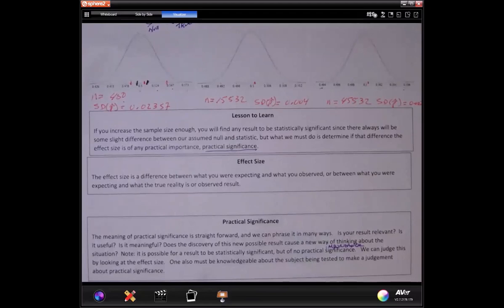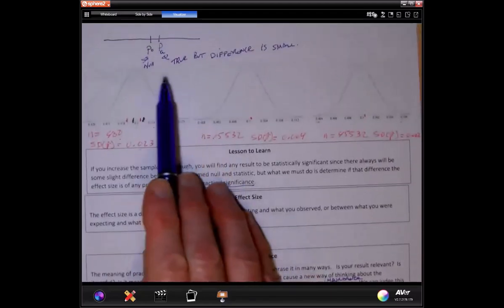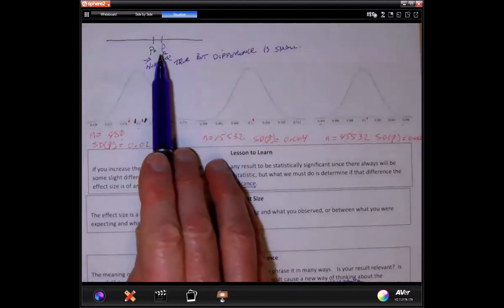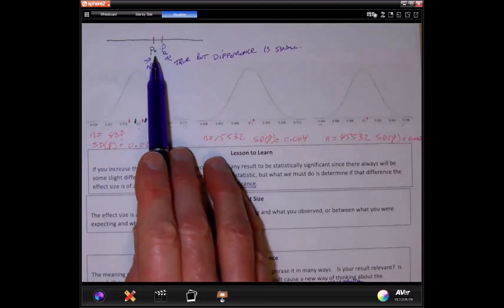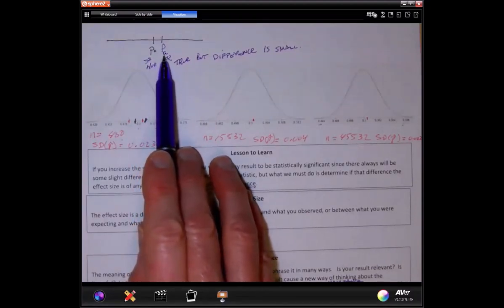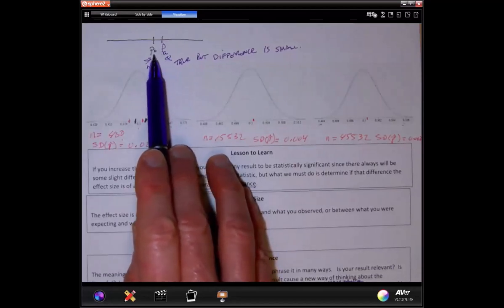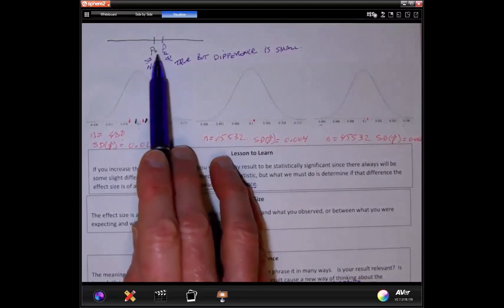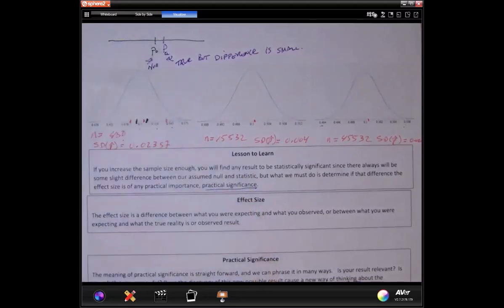So it's now thinking about what the result means, and it's all about the differences. One perspective is, this is what you think the null value is, but it turns out the reality is a little different. But the question is, is that difference here of any importance? Do you care if you're a little bit off?